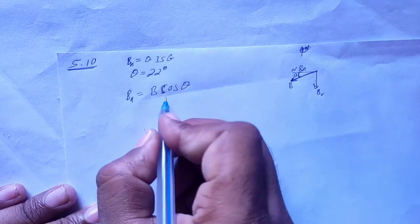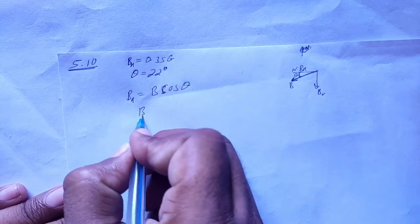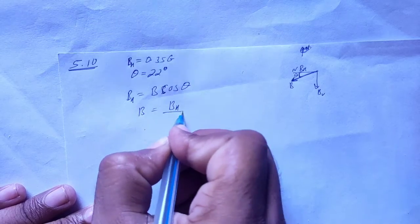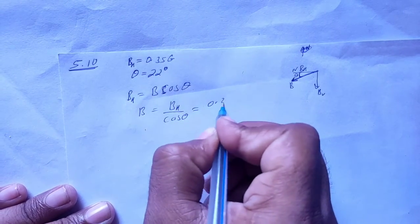This is the horizontal component of the magnetic field. Cosine theta, B_H over B is equal to cosine theta, so B is equal to B_H over cosine theta. B equals 0.35 over cosine of 22 degrees.